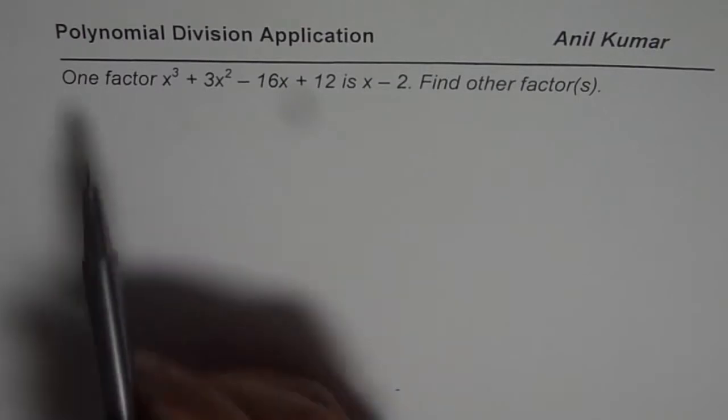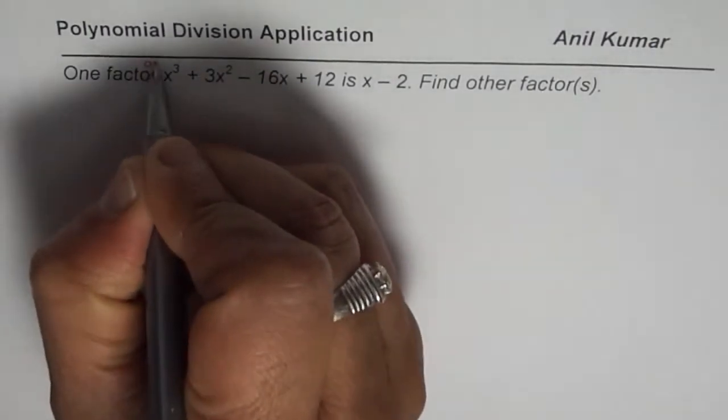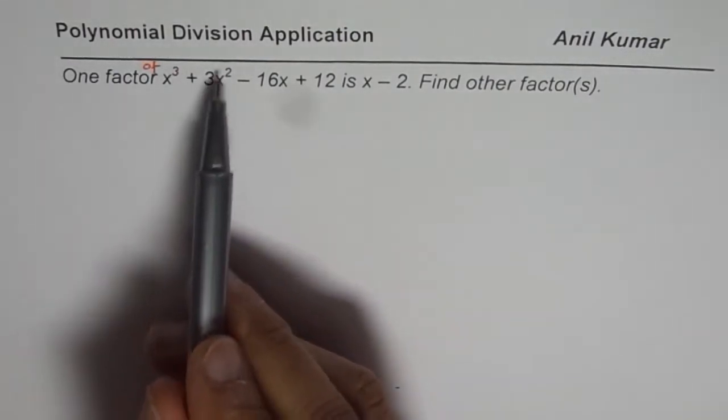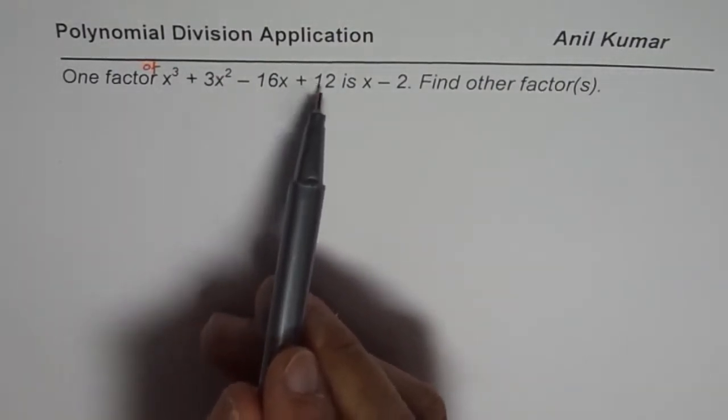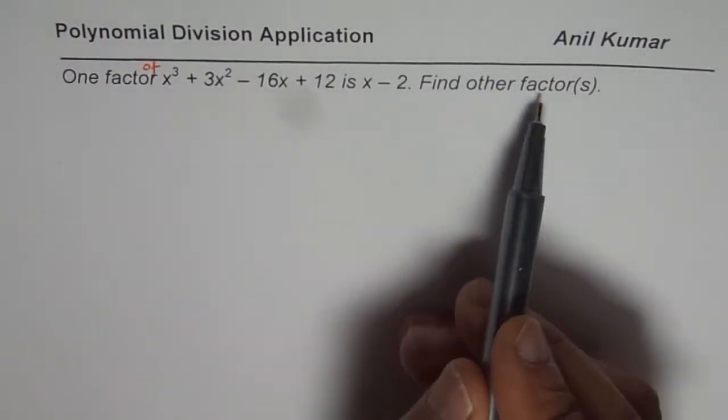The question here is: one factor of x³ + 3x² - 16x + 12 is x - 2. Find other factors.